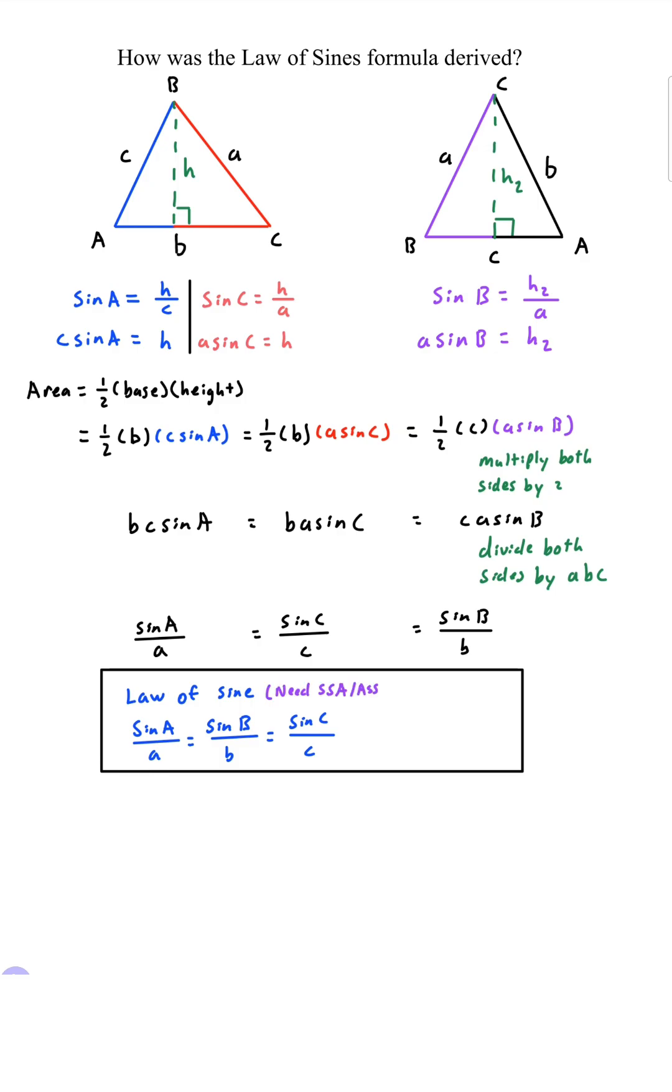Do you know in order to use this you need to have side side angle or angle side side or angle angle side which can be written as side angle angle. You could use it with angle side angle ideally you can't but if you have two angles of a triangle you can find a third angle which will then turn into angle angle side.